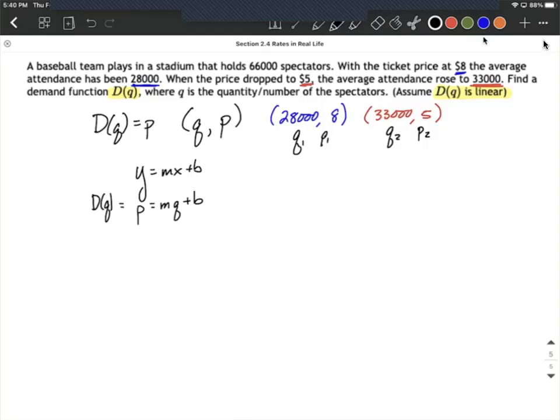So first things first, let's go ahead and try to set up the slope of this line. And normally that'd be Y2 minus Y1 over X2 minus X1. But this time based on those variables, I'm going to write it out as P2 minus P1 over Q2 minus Q1. Now filling in with what I've labeled up above, I can say 5 minus 8 over 33,000 minus 28,000. So negative 3 over 5,000 is going to be the slope of this line.